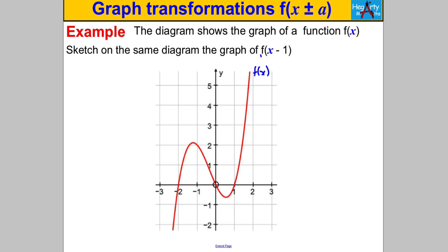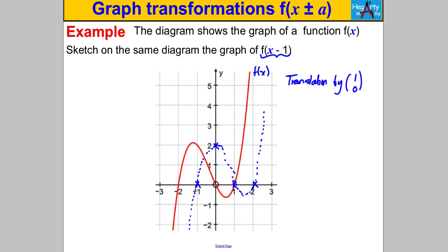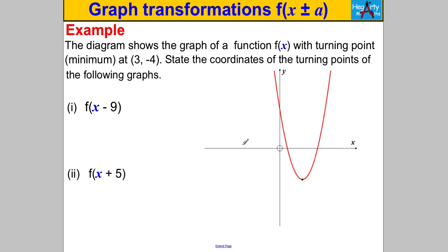Let's try another question — pause the video and have a go. We're given the graph of f(x) and asked to draw f(x-1). That's a translation in the x direction by (1, 0), so we move the whole graph to the right by one unit. Each key point moves one unit to the right, and joining the dots gives us our graph of f(x-1), shifted one unit to the right.